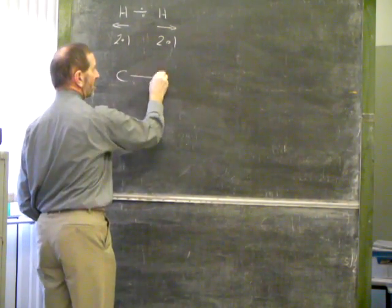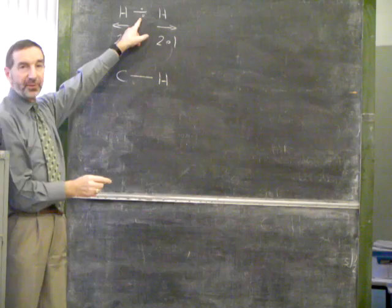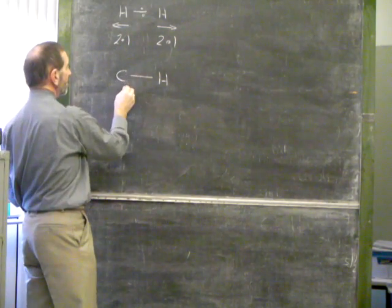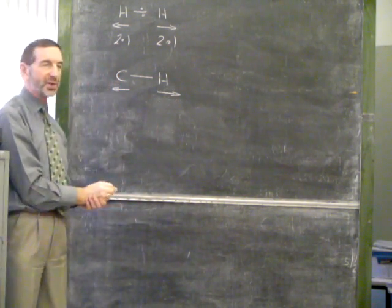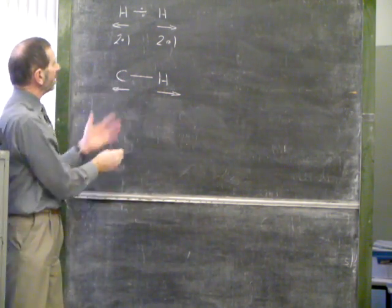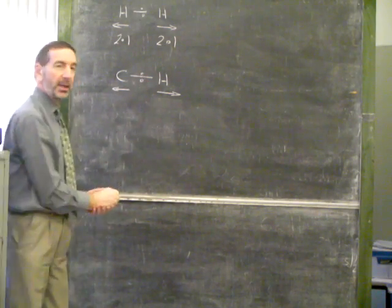Another bond which falls into this category, where the electrons are evenly shared, is a carbon-hydrogen bond. In this case, the pulling powers are marginally different. The difference is so small that it still counts as being evenly shared.